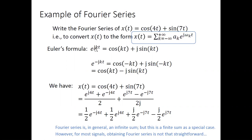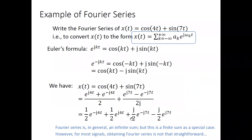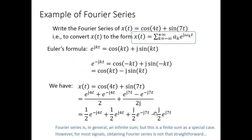Taking the difference of the two equations: e^{jkt} - e^{-jkt} = 2j sin(kt). Inversely, sin(7t) = (e^{j7t} - e^{-j7t}) / (2j). For the sine signal, don't forget the j in the denominator. We can simplify by splitting into four terms. Since j² = -1, moving j from denominator to numerator flips the signs: the e^{-j7t} term gets a positive sign and e^{j7t} gets a negative sign. This is the Fourier series for x(t).